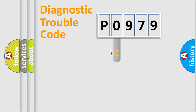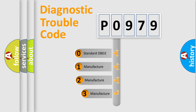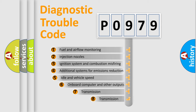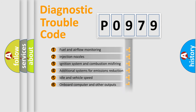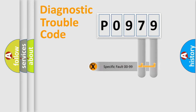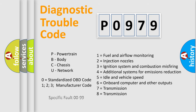This distribution is defined in the first character of the code. If the second character is expressed as zero, it is a standardized error. In the case of numbers 1, 2, or 3, it is a manufacturer-specific error. The third character specifies a subset of errors, and this distribution is valid only for the standardized DTC code. Only the last two characters define the specific fault of the group.